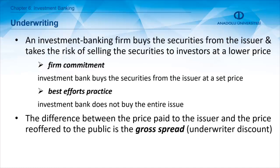There are different versions of underwriting. In a firm commitment, the investment bank buys the securities from the issuer at a predetermined price. In a best efforts arrangement, the investment bank does not buy the entire issue but does its best to sell it. The difference between the price paid to the issuer and the price re-offered to the public is the gross spread, also referred to as the underwriter discount.